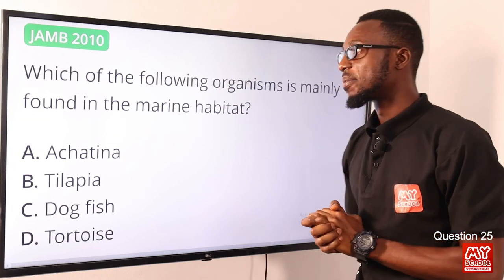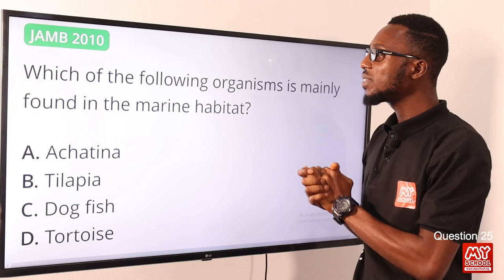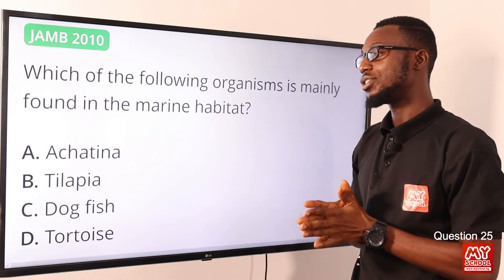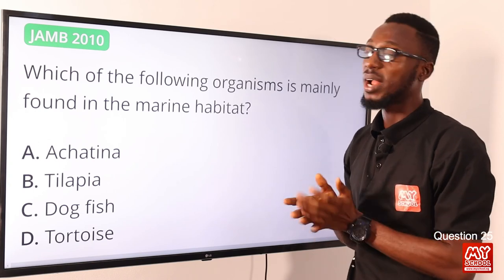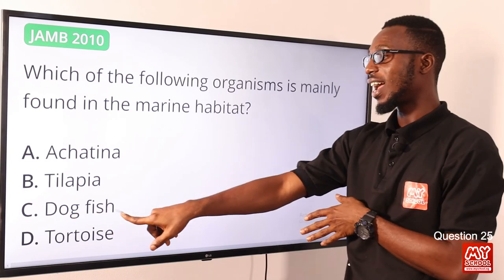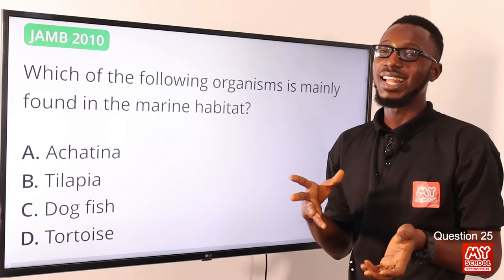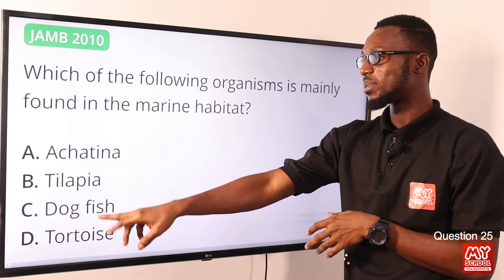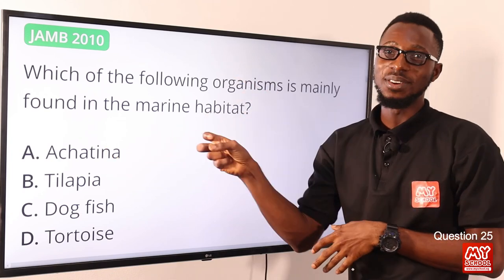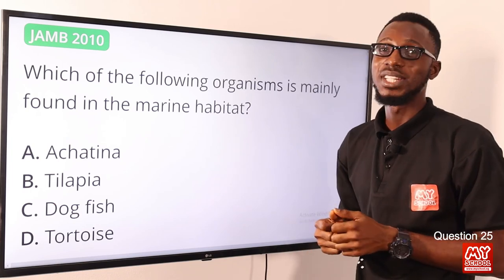Question 25: Which of the following organisms is mainly found in the marine habitat? Common tropical open-sea fish include sharks, croaker, sea catfish, and dogfish — dogfish is actually a type of shark and is not selective in its diet. Achatina refers to giant land snails, so it is not marine. The correct option is option C, the dogfish.